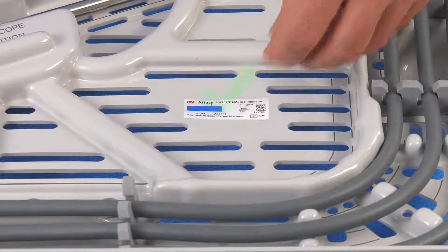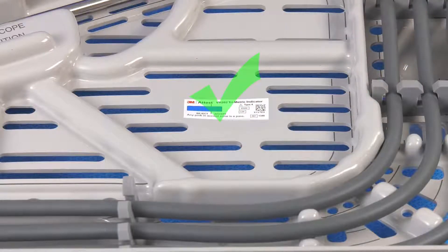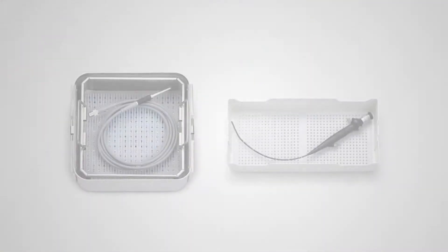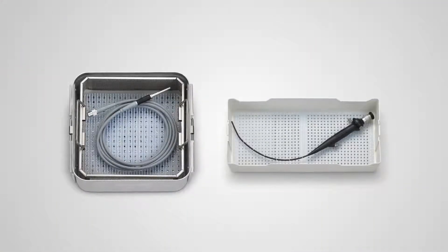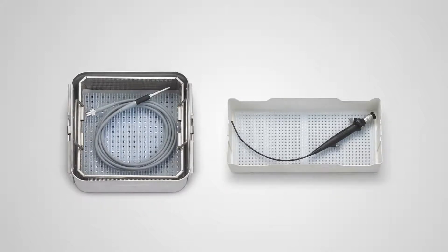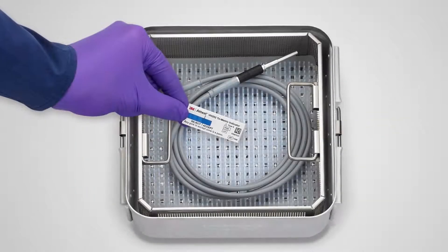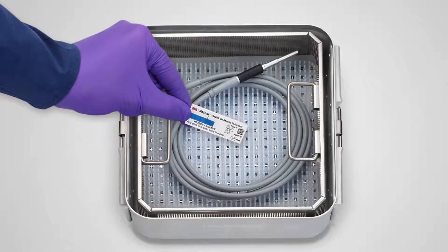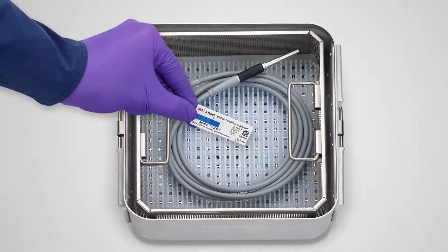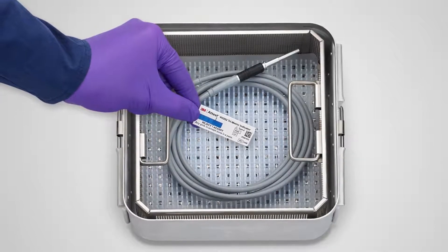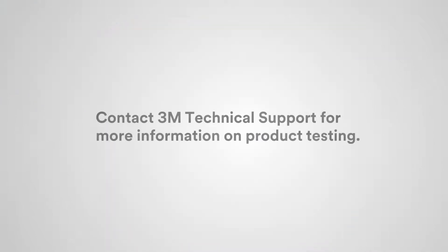Process the load according to the manufacturer's instructions. Since the 3M A-Test Trimetric CI is the first of its kind, product testing of your pack may be useful to determine the location that creates the greatest challenge to sterilant penetration. Contact 3M Technical Support for more information on product testing.